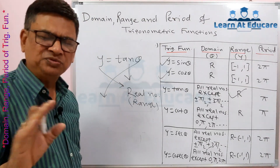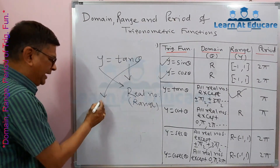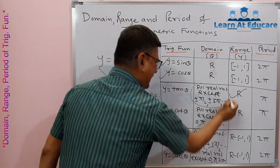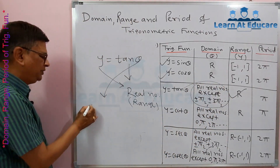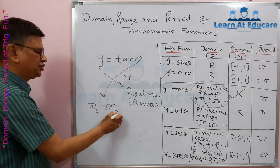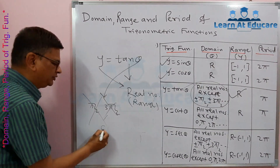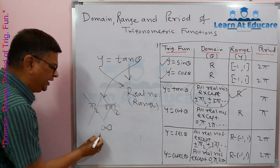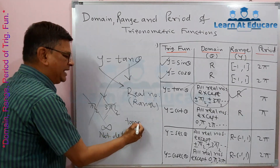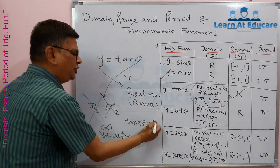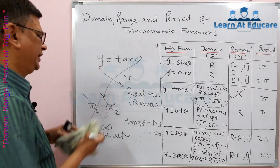For tan θ, the domain is all real numbers except ±π/2, ±3π/2 — that is, we cannot take odd multiples of π/2, because at those angles the trigonometric ratio becomes infinity and is undefined. For example, tan 90° is not defined, so such values are excluded from the domain.